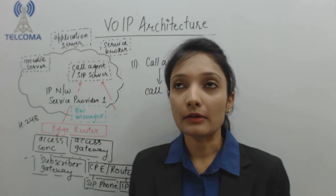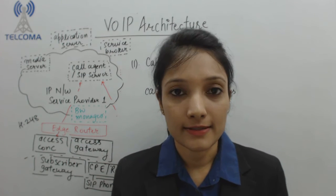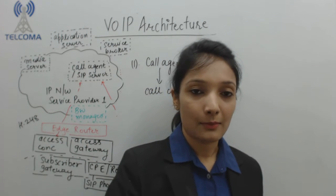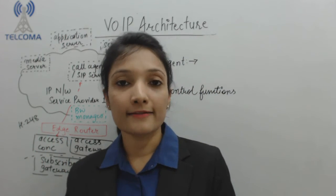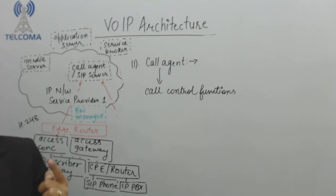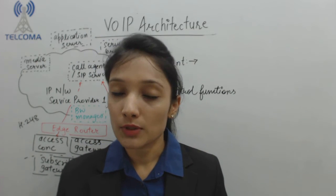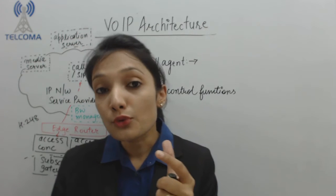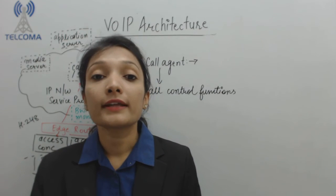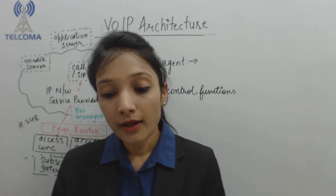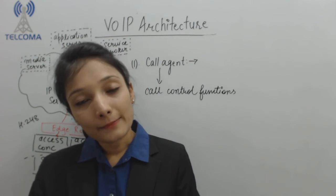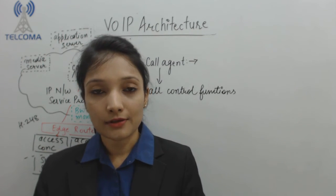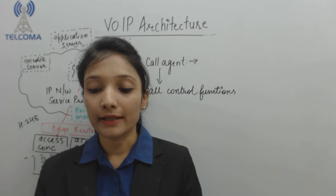It can include supplementary services like caller ID or call waiting. The call agent provides call control functions and also participates in the signaling between phones and device control flows — that means controlling, terminating, or forwarding messages. All these components together are also referred to as a soft switch in the VoIP system, because it maintains various call control activities, signaling between two phones, and terminating and forwarding messages between them.